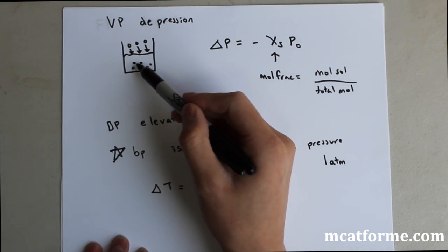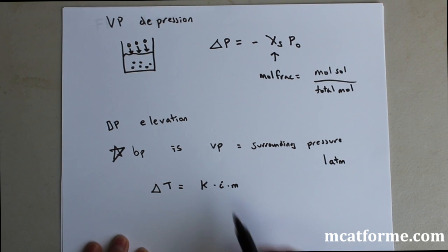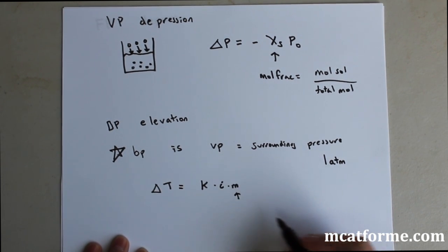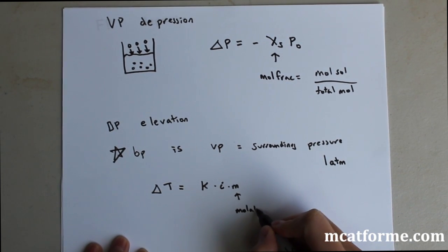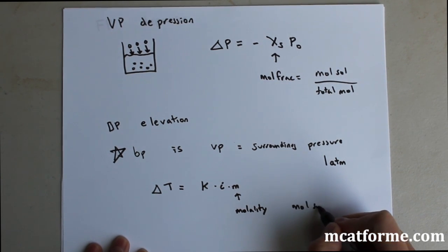Similarly, if we add these solute molecules, the boiling point is going to increase. It's always when we add in these solute molecules. That's where this m comes in. This is molality. This would be the moles of a solute over kilograms of a solvent.